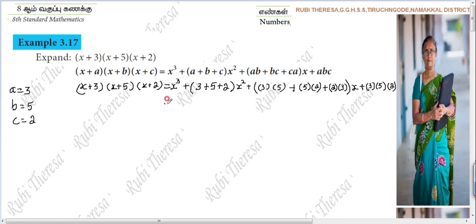Do you follow? So x cube plus 3 plus 5, 8, 8 plus 2, 10, 10 into x squared, 10x squared. Plus 3 fives are 15.